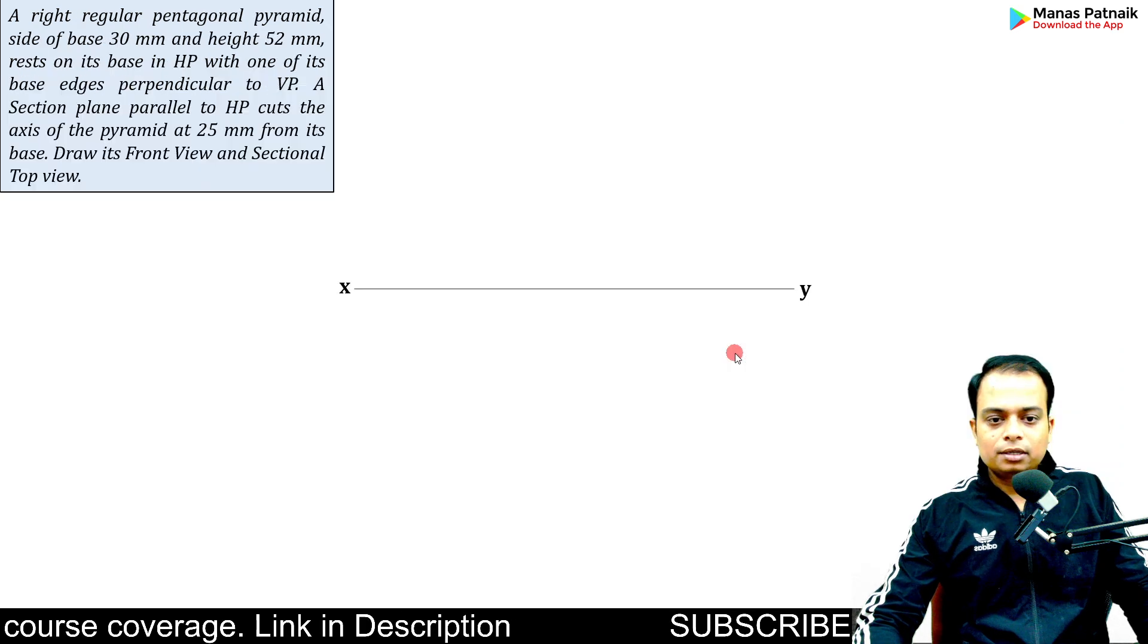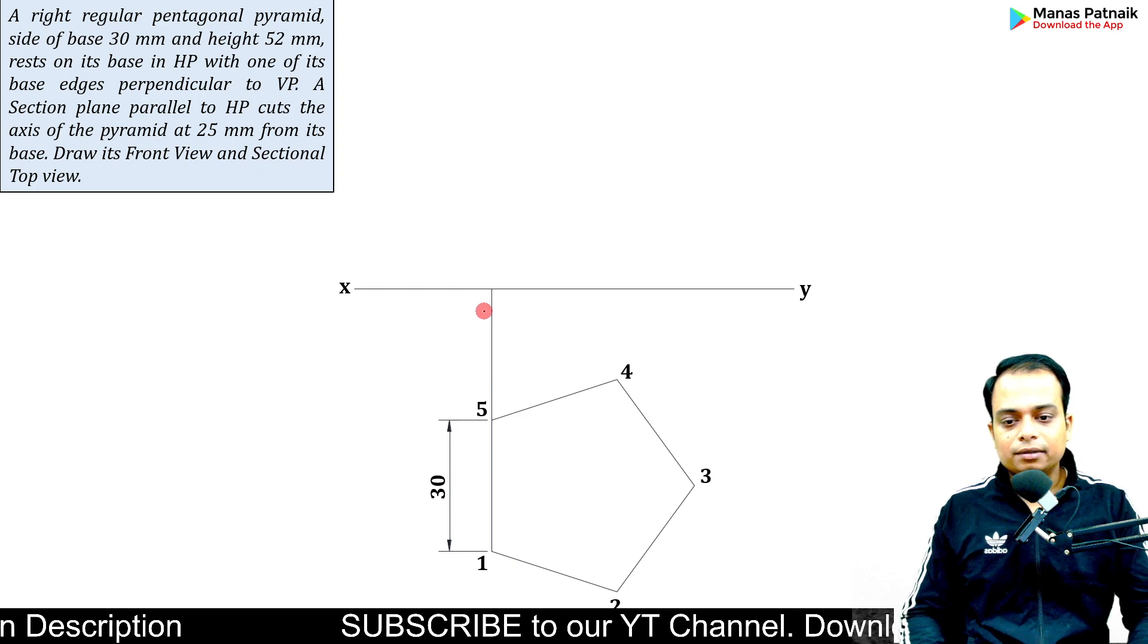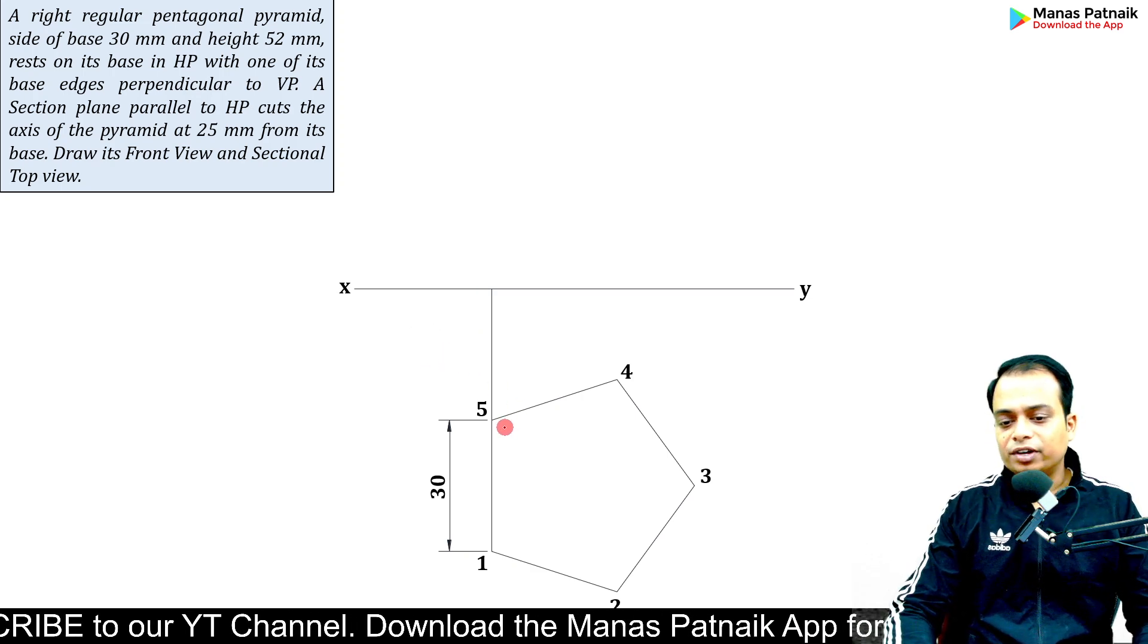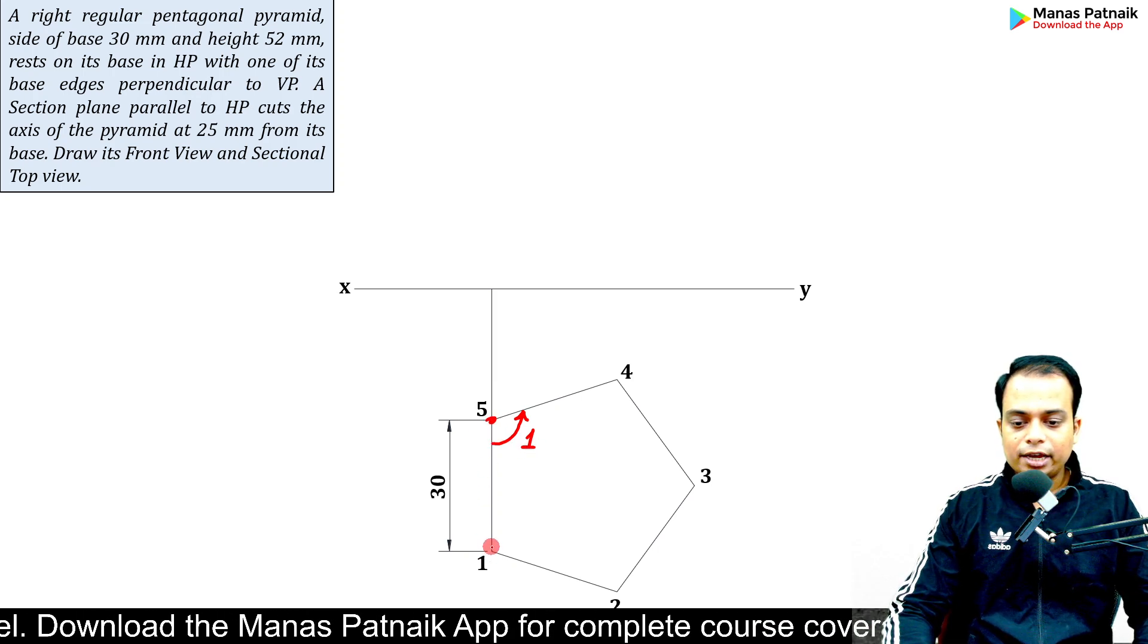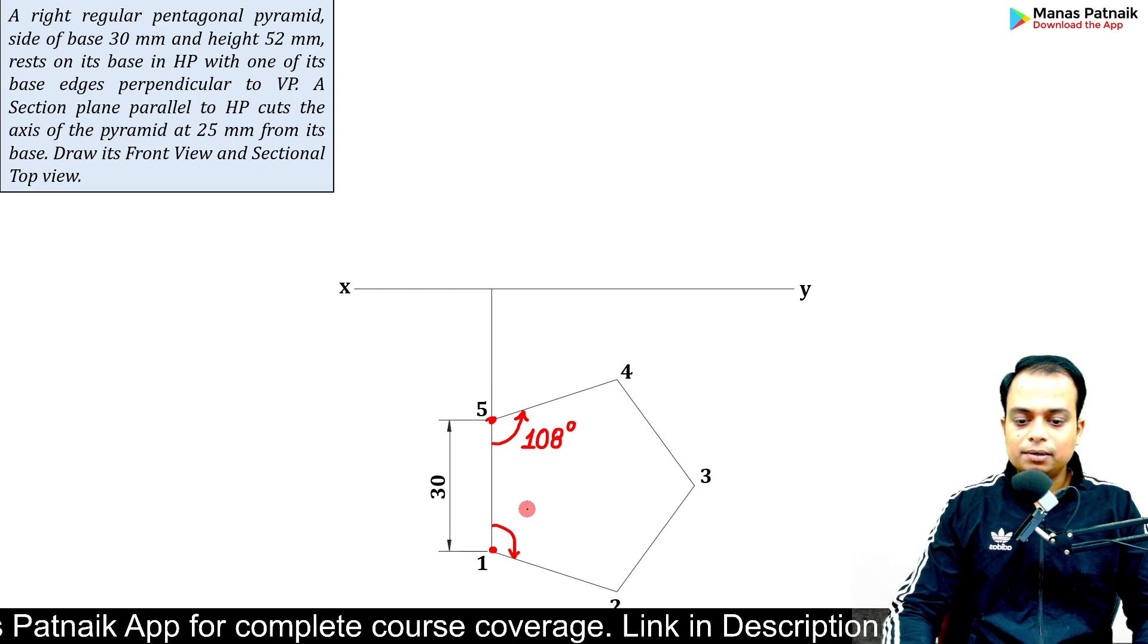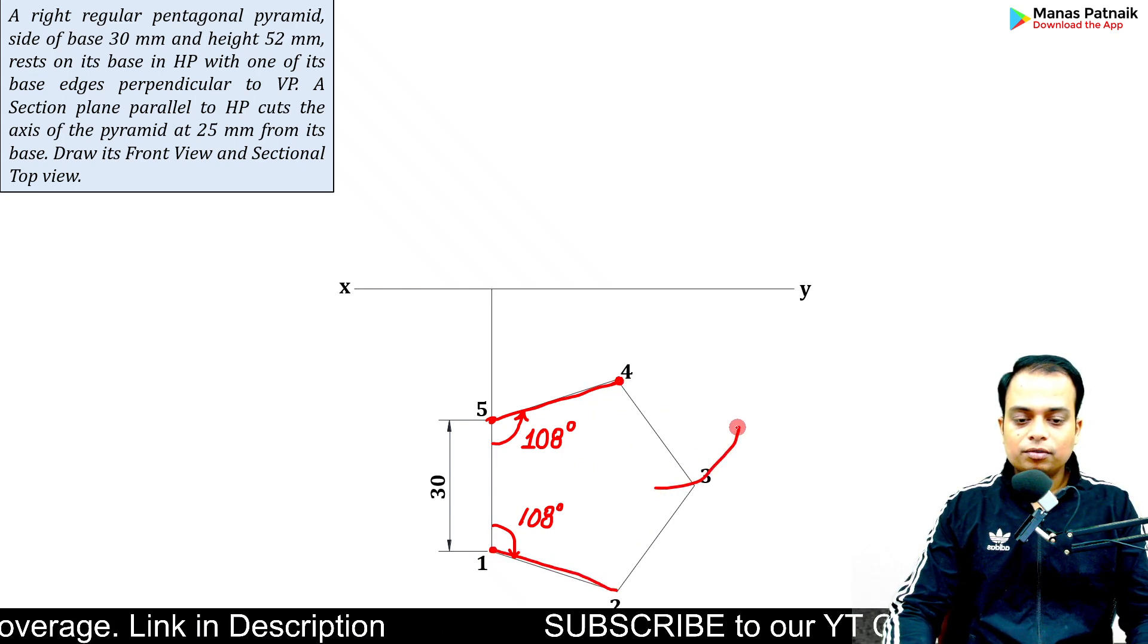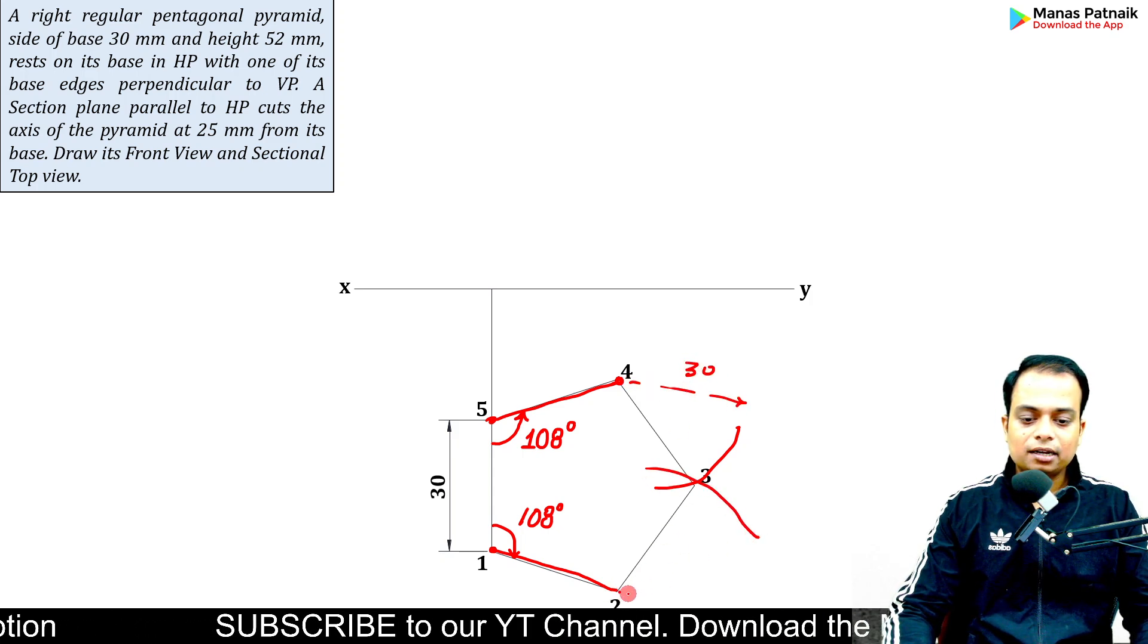The beginning is going to be very easy. You have to first start by making a regular pentagon. You can assume this distance as 30 millimeters or 20 millimeters. Once you have this point, draw a line of 30 millimeters. This angle has to be 108, this angle as well is 108 - 30 millimeters, 30 millimeters.